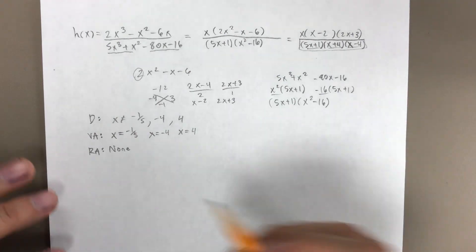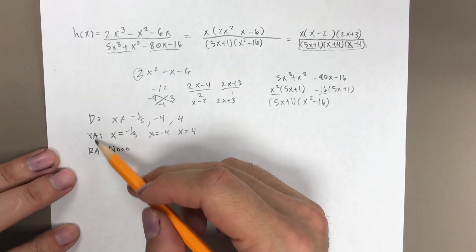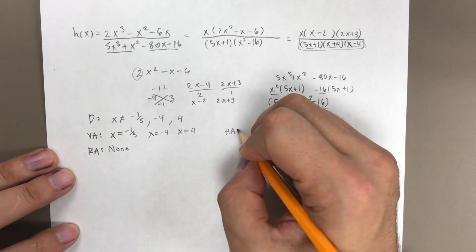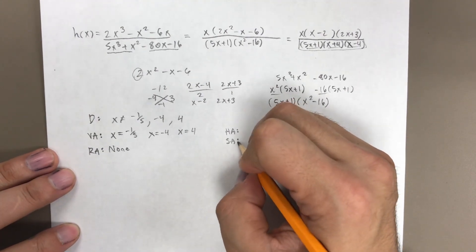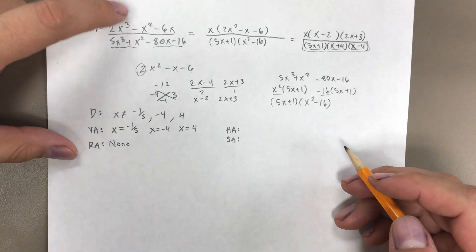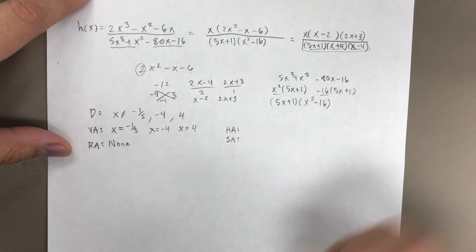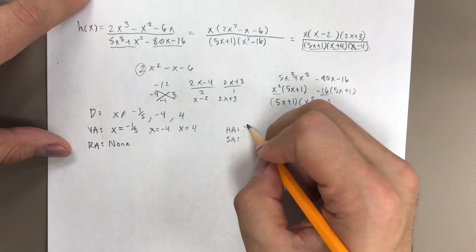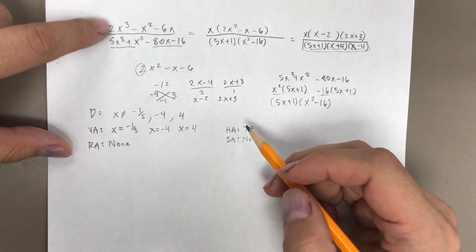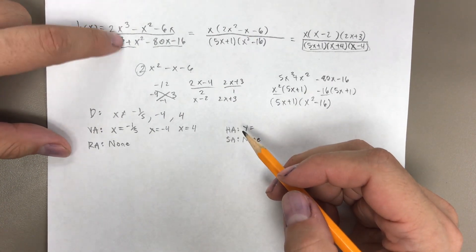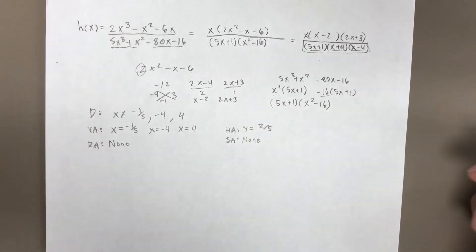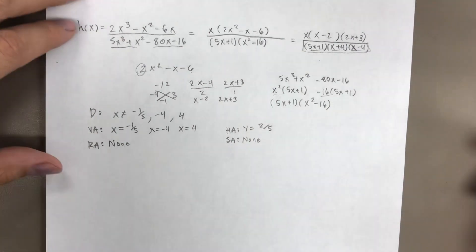Next, we check for horizontal and slant asymptotes. The degree in the top is 3 and the degree in the bottom is 3, so we have a horizontal asymptote, not a slant asymptote. To find the horizontal asymptote, I compare the lead coefficients: 2 over 5, so y equals 2/5. That gives us all of our asymptotes.